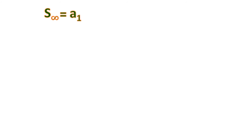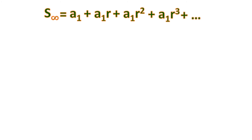Let S sub infinity be the sum of the infinite geometric sequence, equal to a sub 1 plus a sub 1 times r plus a sub 1 times r squared, plus the fourth term, and so on — infinitely many terms. We then multiply all terms by r to get r times S sub infinity.